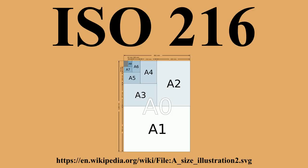All ISO 216, ISO 217, and ISO 269 paper sizes have the same aspect ratio, 1:√2, at least within the rounding to whole numbers of millimeters. This ratio has the unique property that when cut or folded in half widthwise, the halves also have the same aspect ratio. Each ISO paper size is one half of the area of the next larger size.